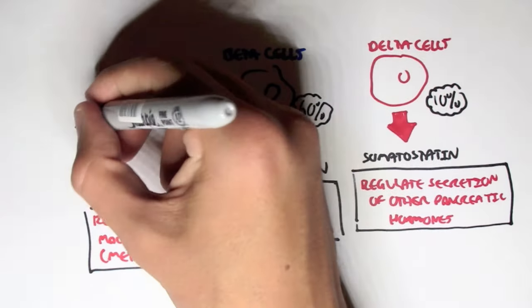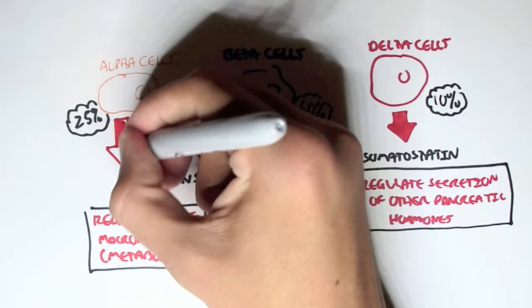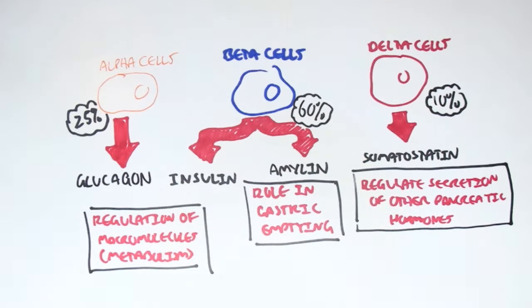And then we have the alpha cells, which make up 25% of the cells within the islets of Langerhans. And it secretes the hormone glucagon. And glucagon has a role in the regulation also of macromolecules, and therefore metabolism. Now glucagon and insulin are not the same. Where one hormone promotes the uptake and reabsorption of macromolecules, the other promotes the breakdown of macromolecules.